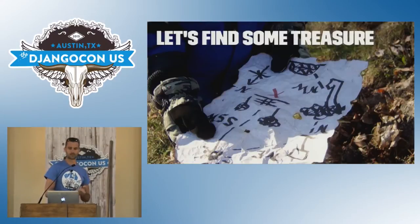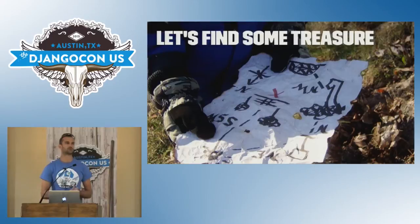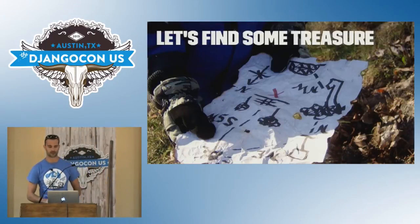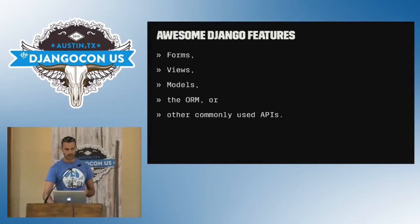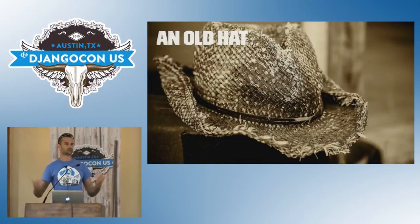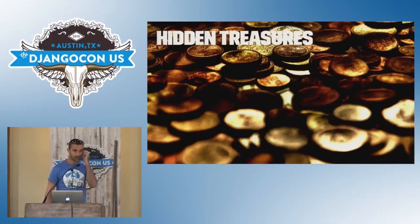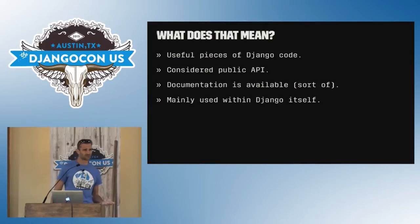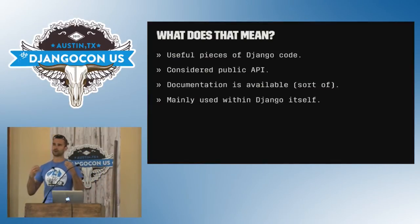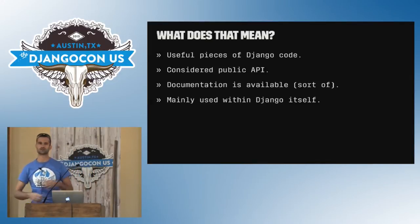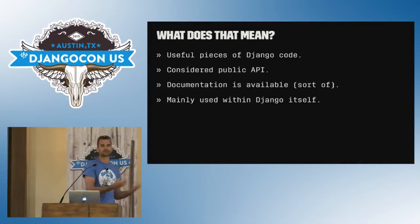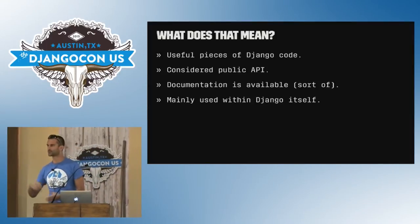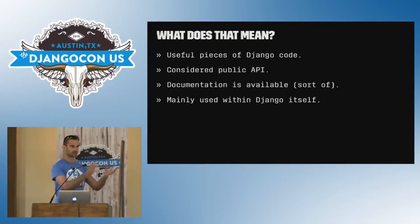Let's find some treasures. What I mean by that is we're all — or most of us — are familiar with forms and views and all the good things that Django has to offer. But they are old hat for those of us that have worked with it for a long time. So I'm trying to talk about what the hidden treasures are: utility functions and things implemented in Django to facilitate other features that might actually be useful in your project, so you don't have to write and maintain those little pieces of code yourself.